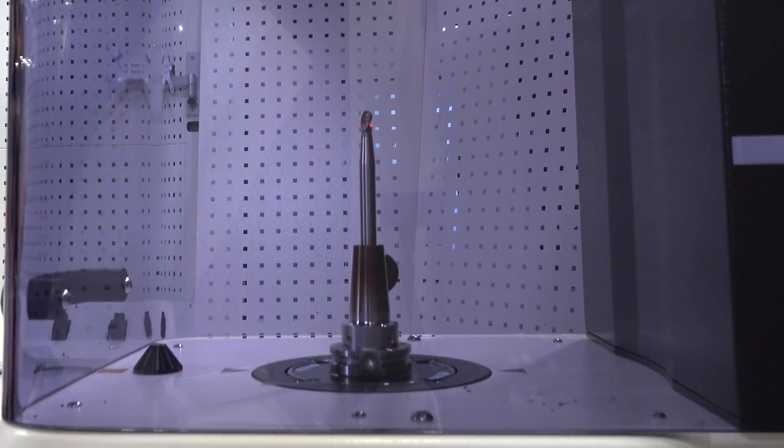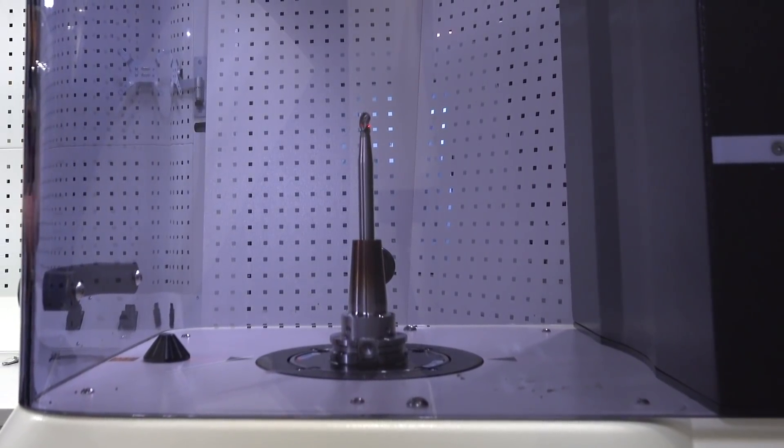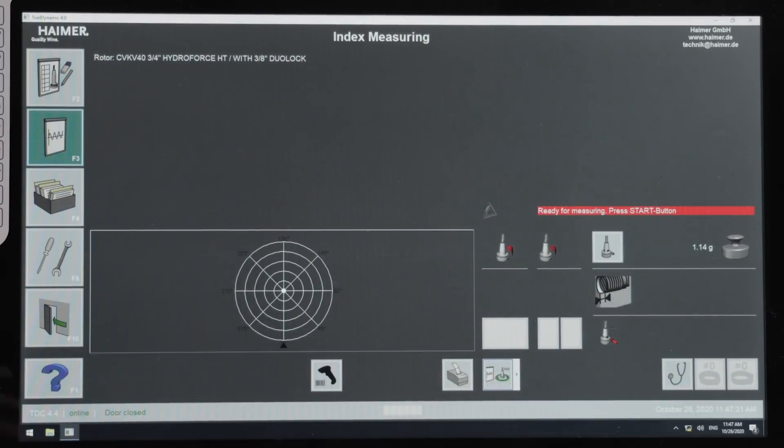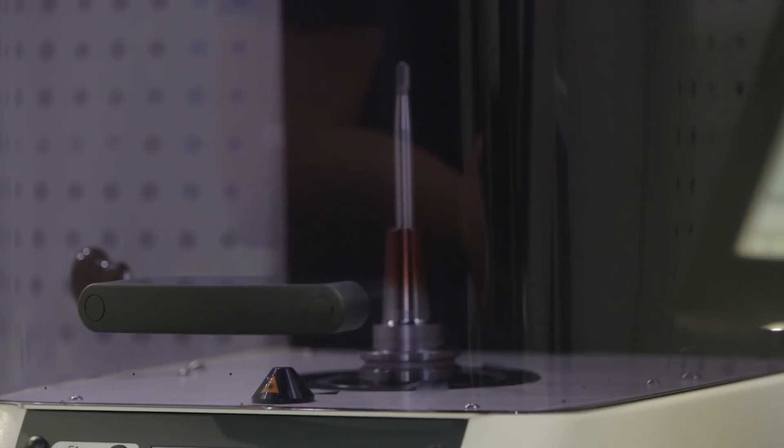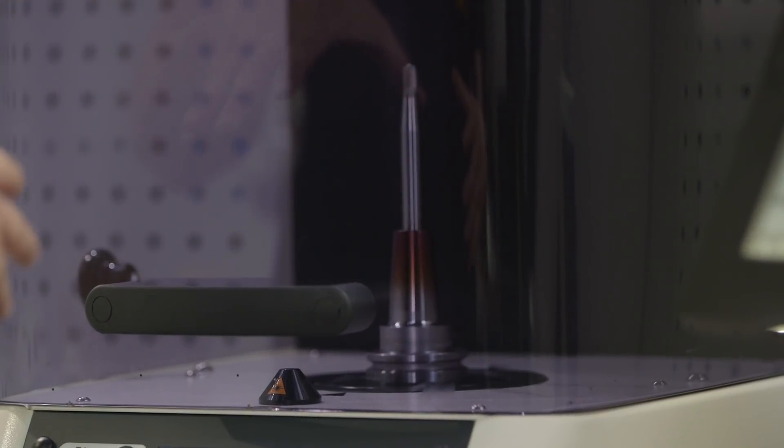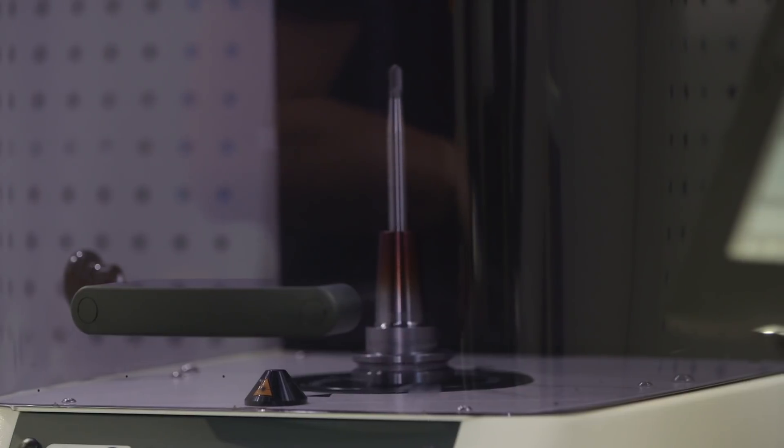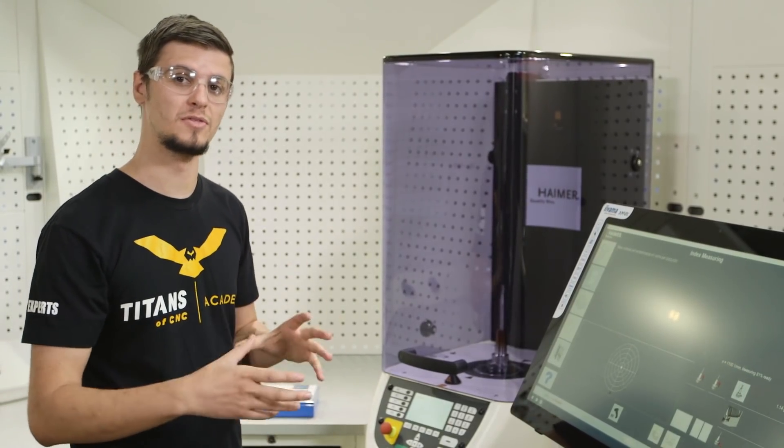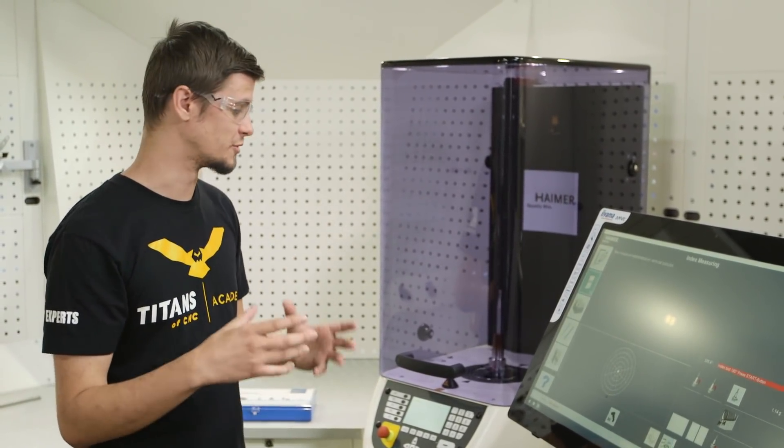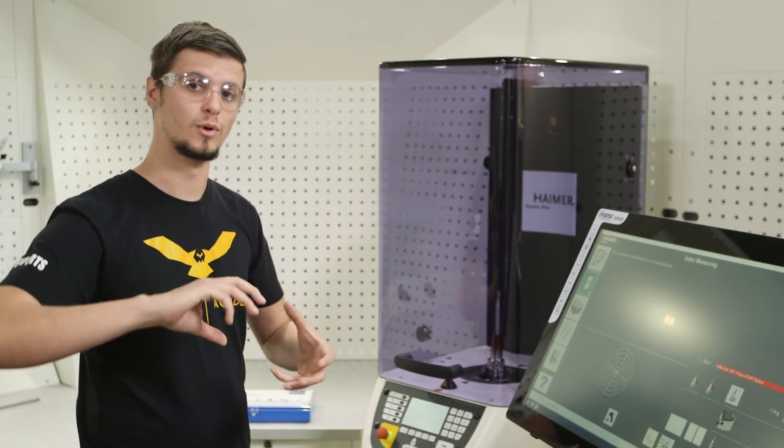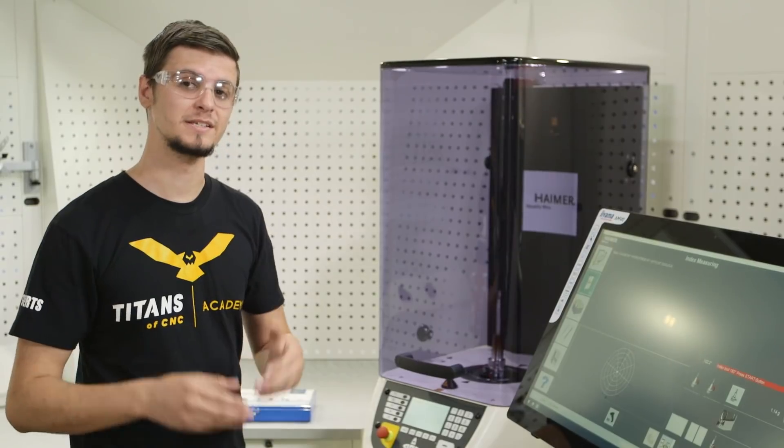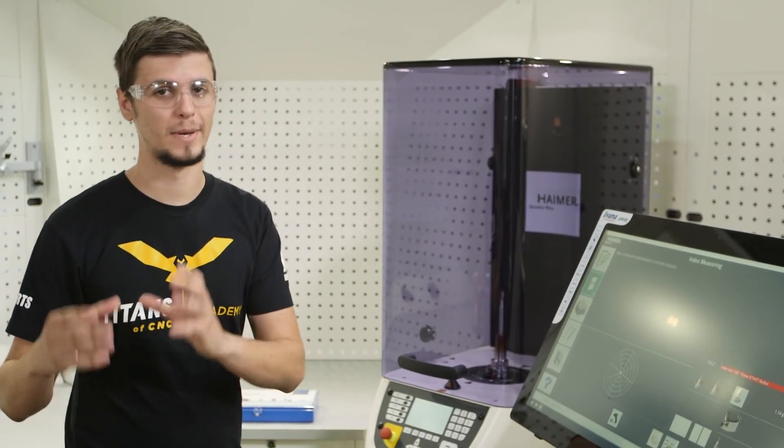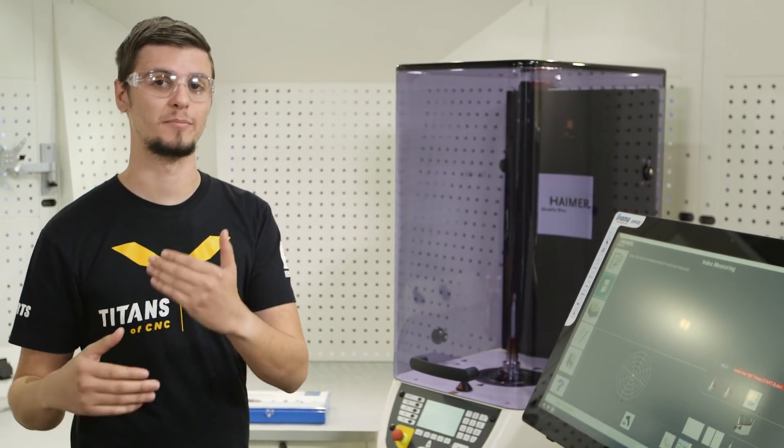I already have my tool clamped and placed into the balancer. I'm going to go to my test screen and hit cycle start. We already have our tool locked in place with our 40 taper adapter. After we run this first cycle, we will then unclamp it, rotate it 180 degrees, and then re-clamp it. This is the best way to have the best accuracy when it comes to balancing tools.